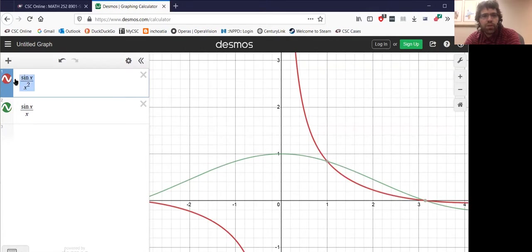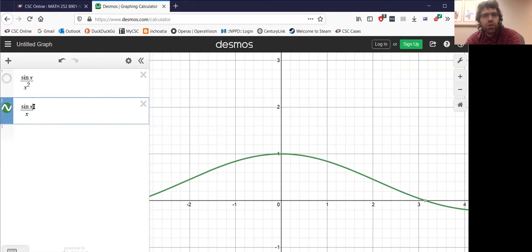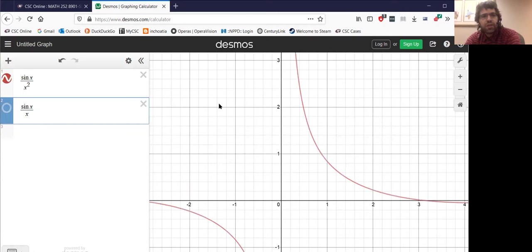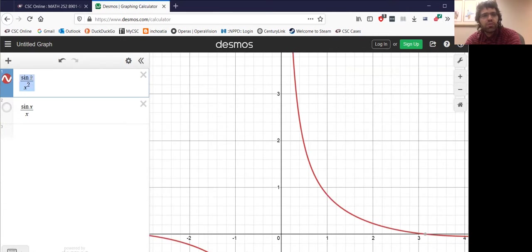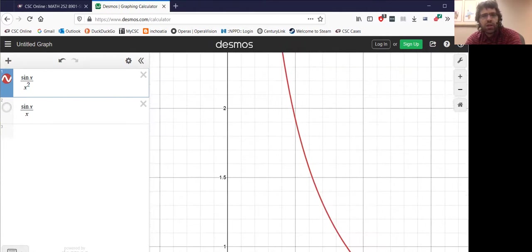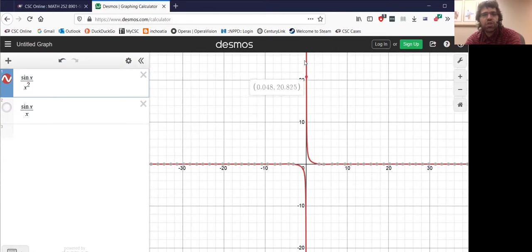For example, consider the sine of x over x squared and the sine of x over x and ask what happens as x approaches zero. This green curve as x approaches zero, the numerator approaches zero, the denominator approaches zero, and the fraction approaches one. This red curve, as x approaches zero, the numerator approaches zero and the denominator approaches zero. So just like what happened down here. But this fraction approaches infinity.